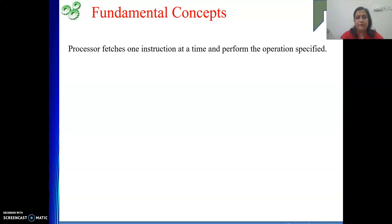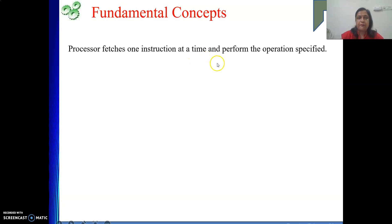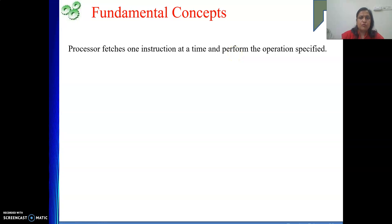Let me revise some fundamental concepts. Whenever we are solving a problem, we write a set of instructions. The processor fetches one instruction at a time and performs the operation specified. We are following the von Neumann concept — our instructions are in memory, and from memory we need to get each instruction into the processor. That is called fetching. We bring one instruction at a time into the processor, find out its meaning, and based on what it asks us to do — whether data movement or an ALU operation — we perform that operation as specified by the opcode.